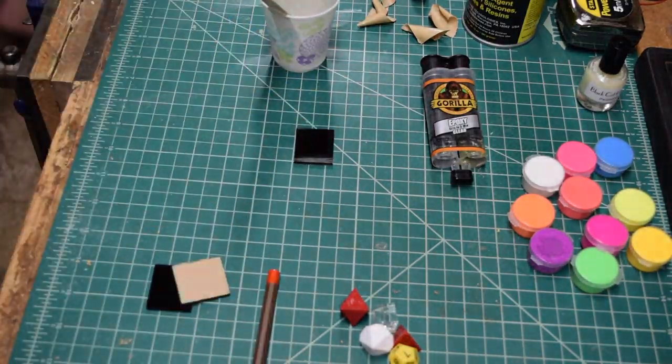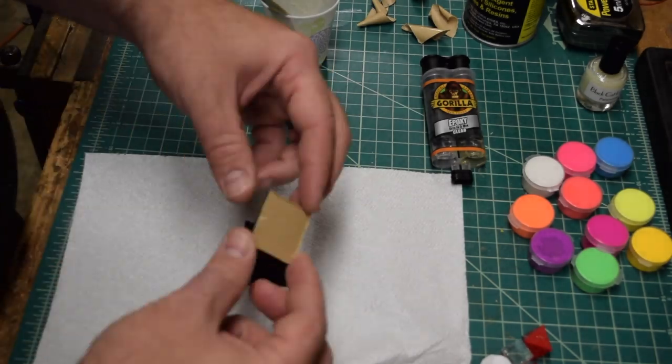To make the two pieces of the jig, I roughed up each side of the lexan and applied epoxy.